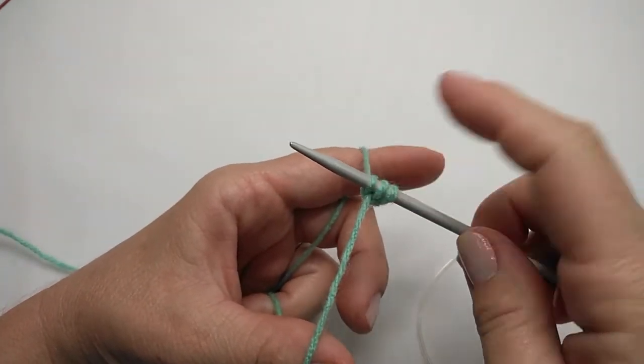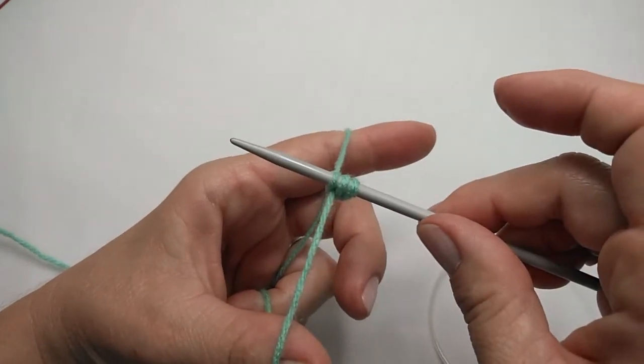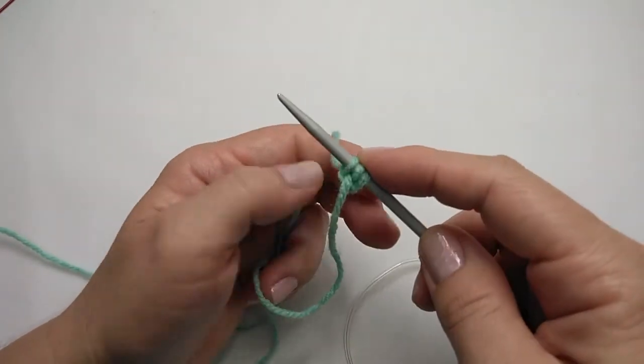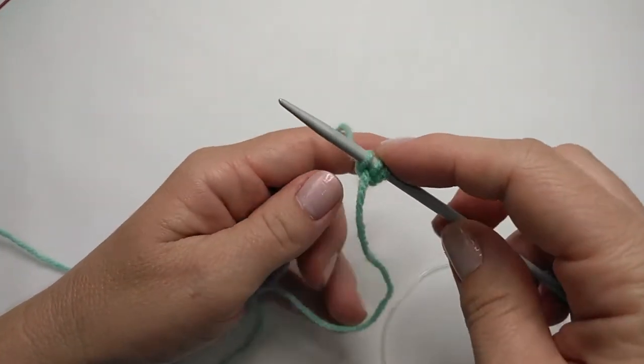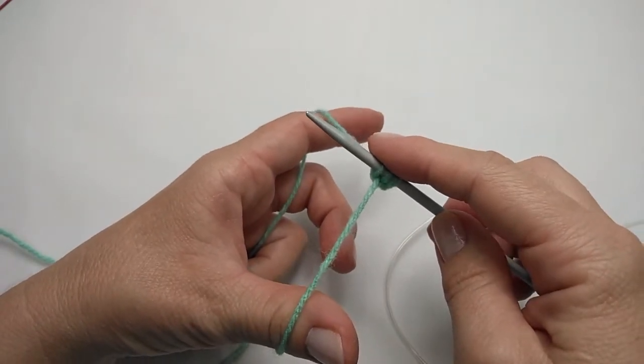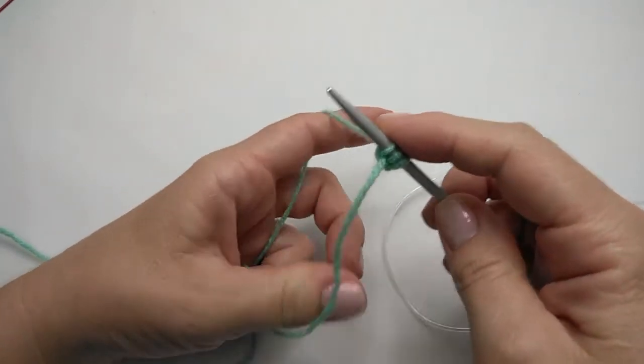Now you don't want to pull it too tight. It must still be able to slide on your needle, otherwise you are going to battle a lot when knitting into it. So I'm going to show you that once more with an explanation and then I'm going to do the rest of the stitches and you can just watch.